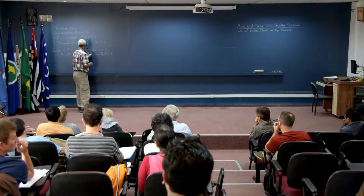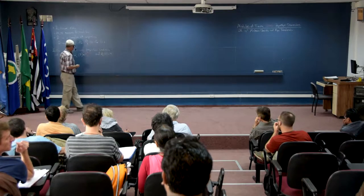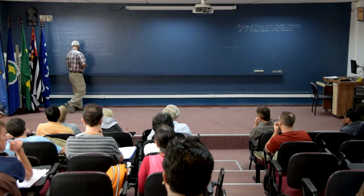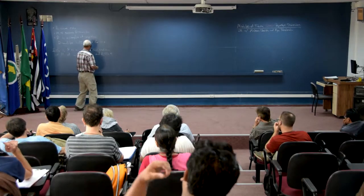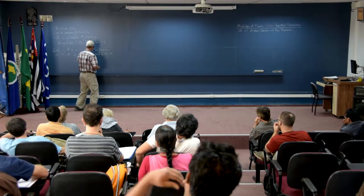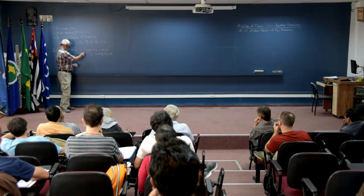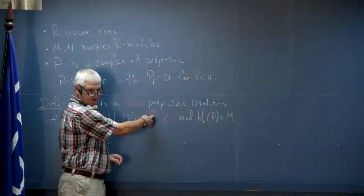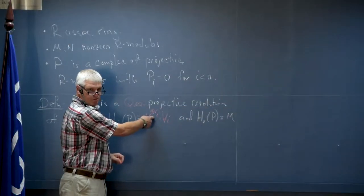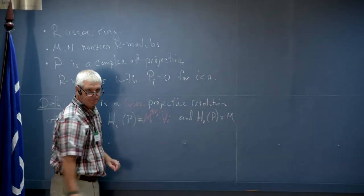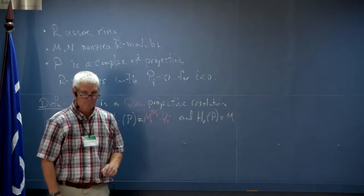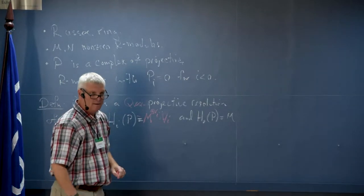This is for all i — the homology at each degree is a direct sum of copies of M. I suppose it's bad English but you'd be better to call it a projective quasi-resolution instead of quasi-projective resolution.